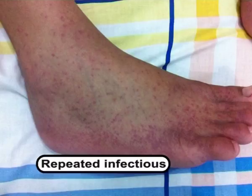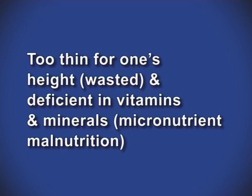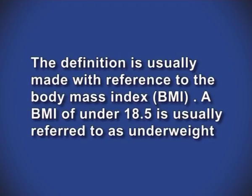Undernutrition is defined as the outcome of insufficient food intake and repeated infectious diseases. It includes being underweight for one's age, too short for one's age (stunted), too thin for one's height (wasted), and deficient in vitamins and minerals, that is micronutrient malnutrition. Underweight implies that the body weight of an individual is below the accepted average normal weight. The definition is usually made with reference to BMI; a BMI of under 18.5 is referred to as underweight.